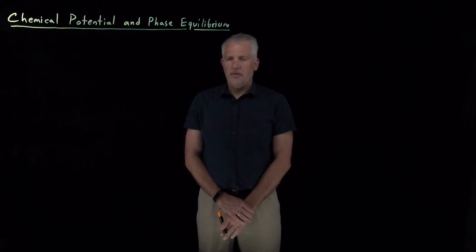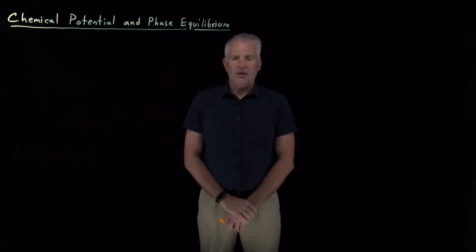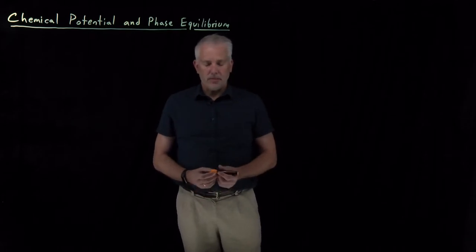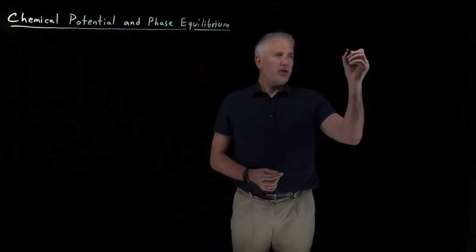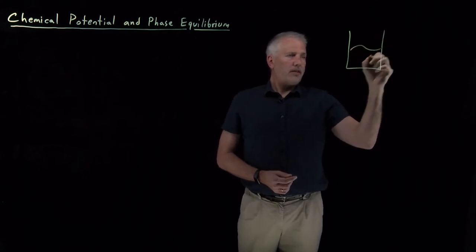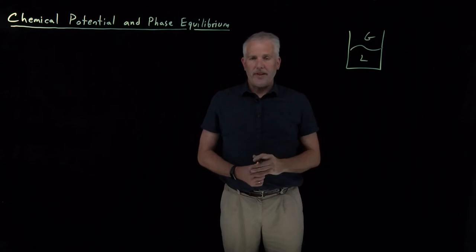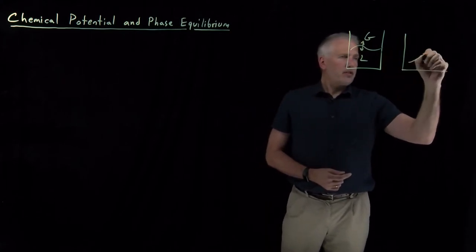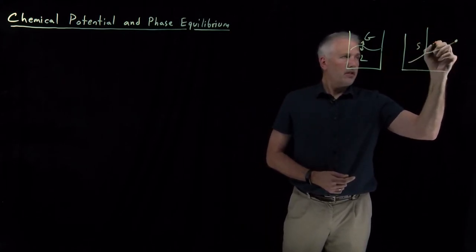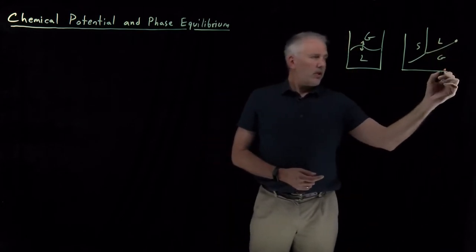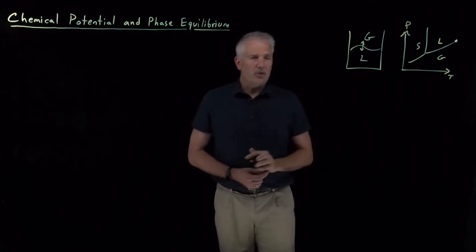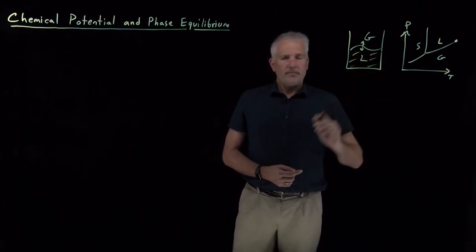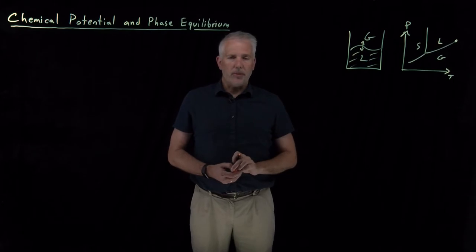One of the most useful uses of the chemical potential will allow us to talk about phase equilibrium in multi-component systems. We understand a lot about phase equilibrium in single component systems already from our work with phase diagrams. If we have a liquid and a gas in coexistence with each other, that's what we mean by phase equilibrium — two different phases in equilibrium with each other. Phase diagrams tell us at a particular temperature and pressure which phase is more stable, where the coexistence line is between the liquid and gas phases, and so on.